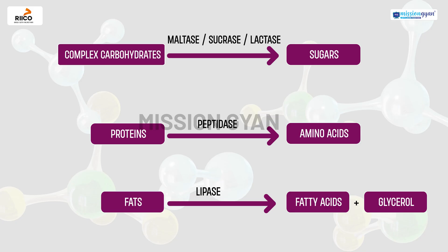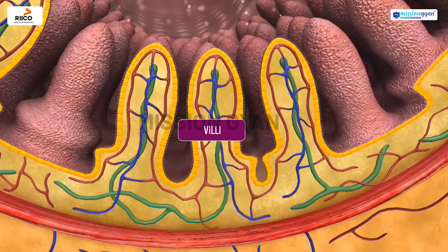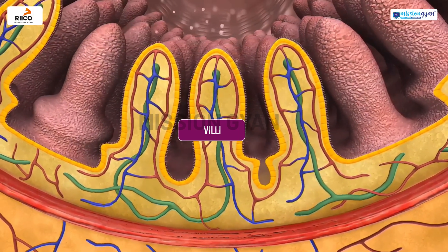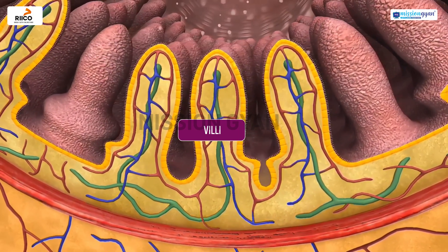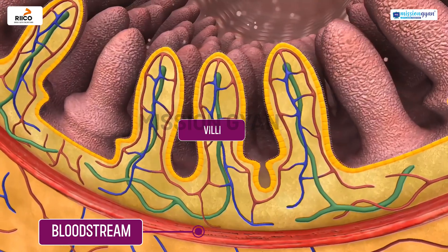These enzymes further break down complex carbohydrates into simple sugars, proteins into amino acids, and fats into fatty acids and glycerol. The nutrients are then absorbed through the villi into the bloodstream.